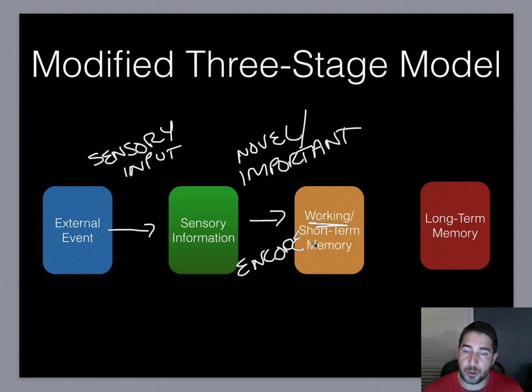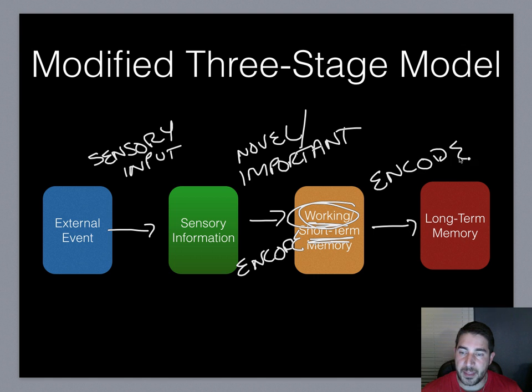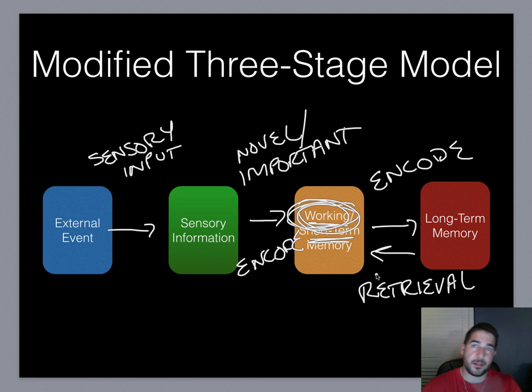When we encode that information, again, it goes into our working or short-term memory. Again, probably the more correct term is working memory. And then we take that working memory. If we really want to do something with it, we continue to work with it. We can encode it further into our long-term memory. And then once it's in our long-term memory, once we file it away, we can retrieve it and it can go back into our working memory again. So we can go back and forth, back and forth throughout the rest of your life. And that's kind of just a visual example of the modified three-stage model of memory. Thank you.